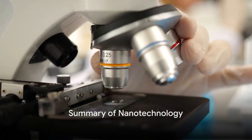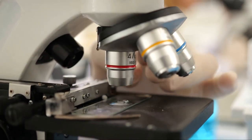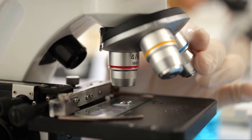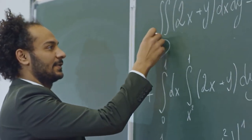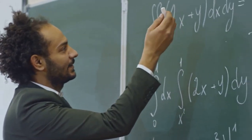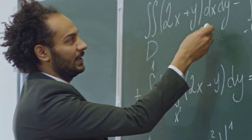To sum up, nanotechnology is a field of science that allows manipulation at a molecular level, a scale so small that it's hard to comprehend. It's a discipline that sprung from the ideas of Richard Feynman in the late 50s and was officially named in the 70s by Norio Taniguchi.